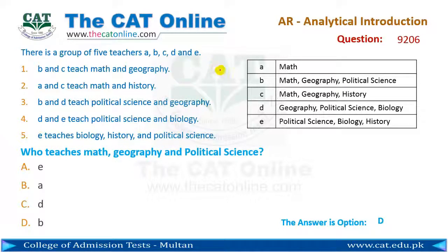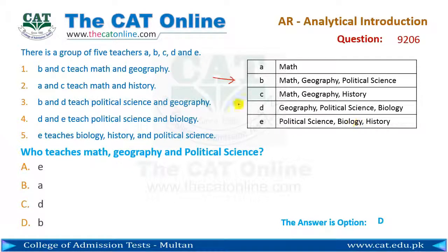Now we will take all these conditions and present them in the form of a table. So A teaches Math; B teaches Math, Geography, and Political Science; and similarly the subjects for C, D, and E are drawn in the table based on the conditions.